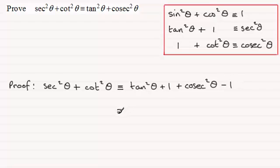And we're straight in now with the answer, because the ones cancel one another out. And we're just left with tan²θ + cosec²θ, which is what we had to prove.